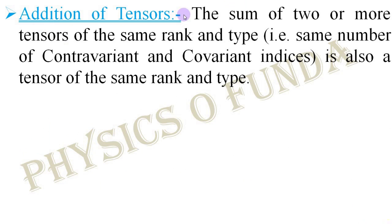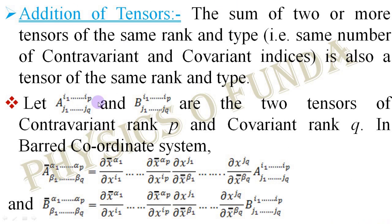Now we consider some mathematical operations regarding tensors. The first one is addition of tensors. If we take the summation of two or more tensors, then the resulting tensor should have the same rank and type as the individual tensors. Let us consider two tensors A and B of contravariant rank P and covariant rank Q. In the barred coordinate system, these two tensors can be represented like these two equations. In previous videos, we discussed how mixed tensors can be represented in a barred coordinate system, and these two equations can be represented regarding that concept.